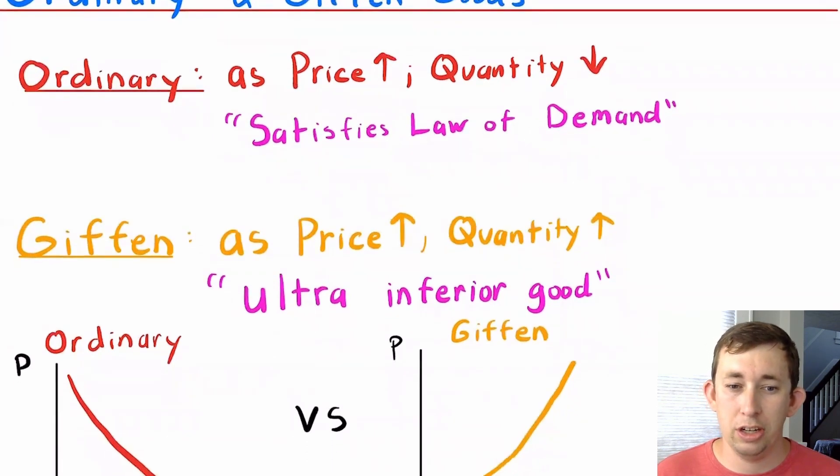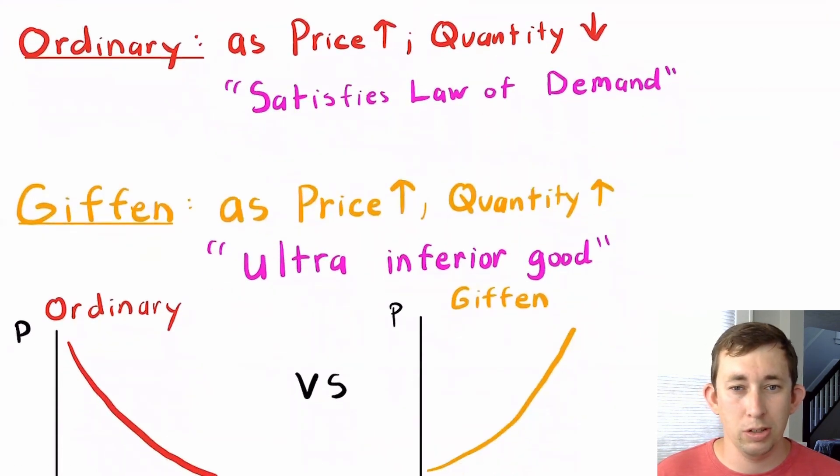Giffen goods are the opposite. Giffen goods say that as the price of something goes up, the quantity will also go up. This is thought of as a super ultra inferior good. This is more of a theoretical good than something that actually exists in the world.